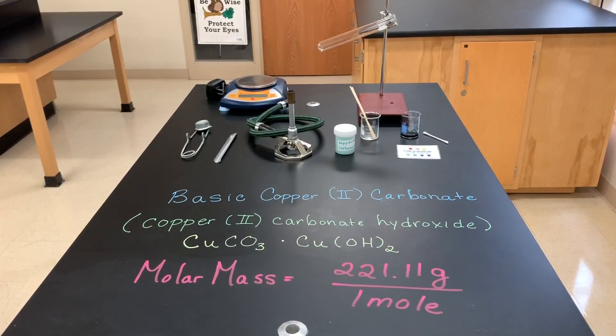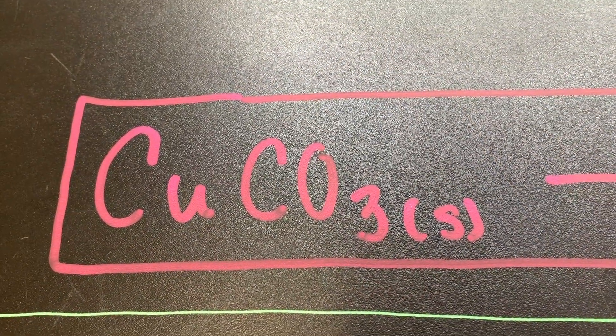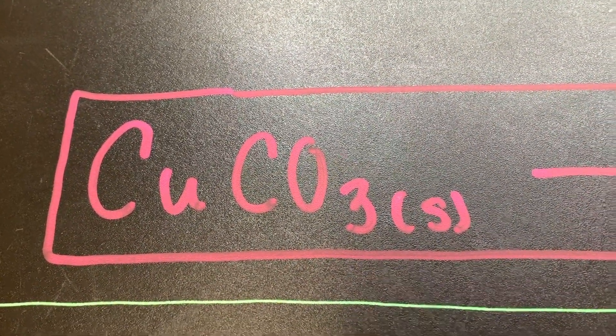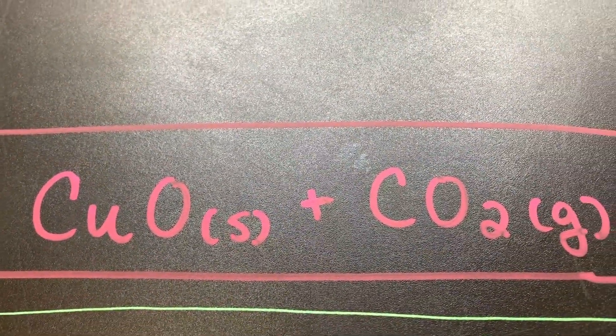Before we can start the lab, we want to think about what kind of balanced equation we're going to have for the decomposition reaction. If copper two carbonate was pure, we could write the reaction where copper two carbonate solid decomposes into copper two oxide and carbon dioxide.